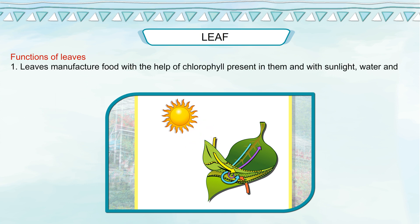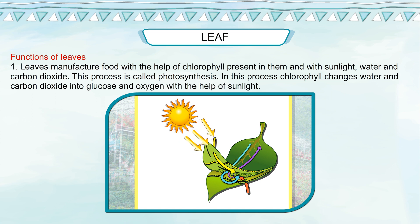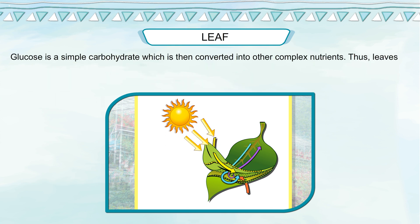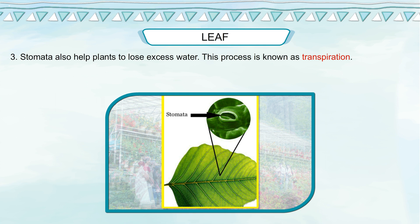Functions of leaves: leaves manufacture food with the help of chlorophyll present in them and with sunlight, water and carbon dioxide. This process is called photosynthesis. In this process, chlorophyll changes water and carbon dioxide into glucose and oxygen with the help of sunlight. Glucose is a simple carbohydrate which is then converted into other complex nutrients. Leaves have tiny pores called stomata for the exchange of gases such as oxygen and carbon dioxide. Stomata also help plants to lose excess water — this process is known as transpiration.